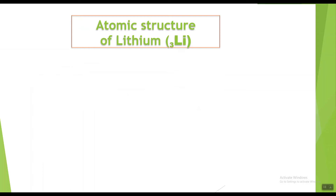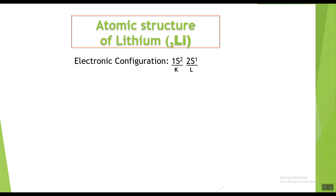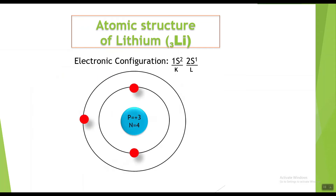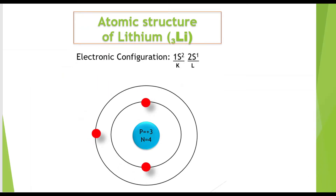Now lithium. The symbol for lithium is Li with atomic number 3, showing it has three electrons. The electronic configuration of lithium is 1s2 2s1, showing two electrons in the K shell and one electron in the L shell. The K shell can accommodate a maximum of two electrons; if there are more, they go to the next higher energy shell. The atomic structure of lithium shows three protons and four neutrons in the nucleus, with two electrons in the K shell and one in the L shell.